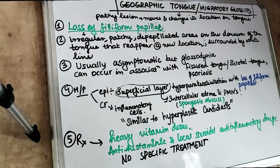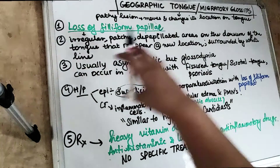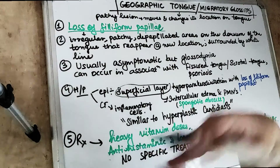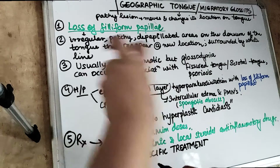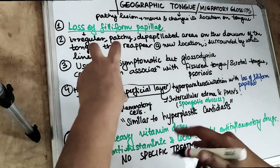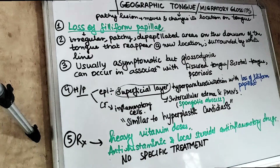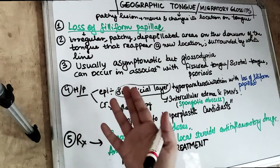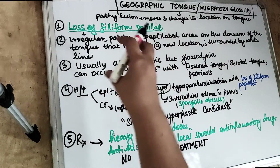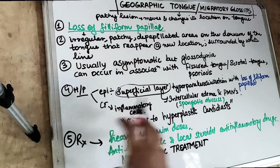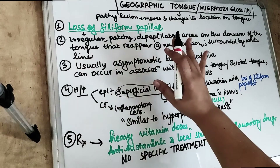As the name suggests, it is a lesion that changes its location. It moves and changes its location each time it spreads — when a lesion disappears in one area, it occurs somewhere else. This is what the term geographic or migratory glossitis signifies. Basically, it is a multifocal, patchy, irregular lesion that is not confined to any specific location.